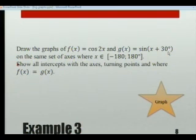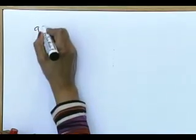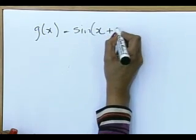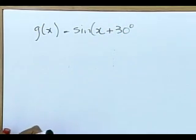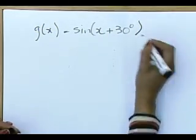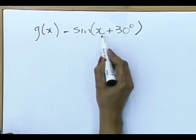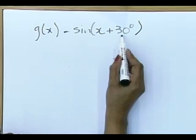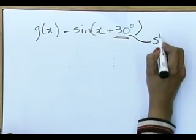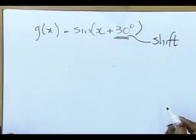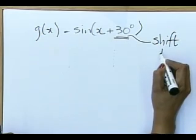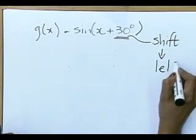g of x equals sin(x + 30°). The +30 is linked to x, so we expect this graph to shift. Very important: identify which way — left or right. Because it is plus 30, I expect this graph to shift to the left.